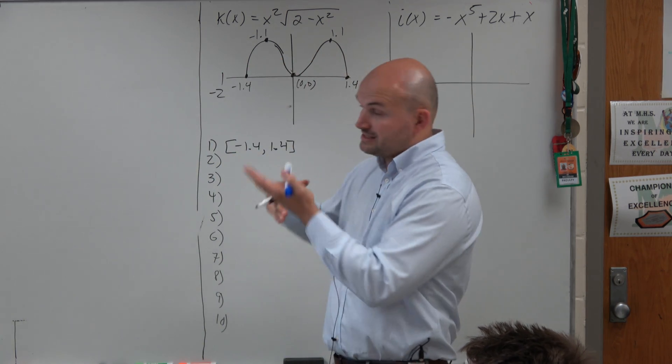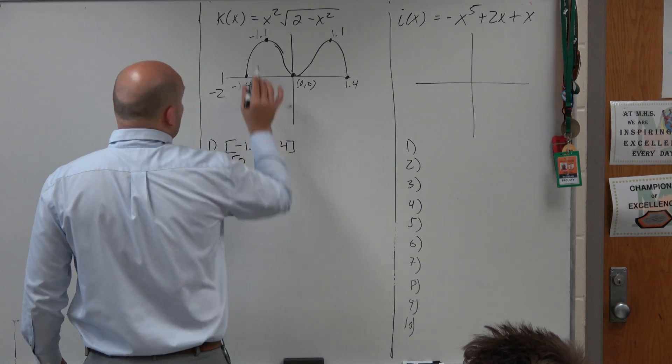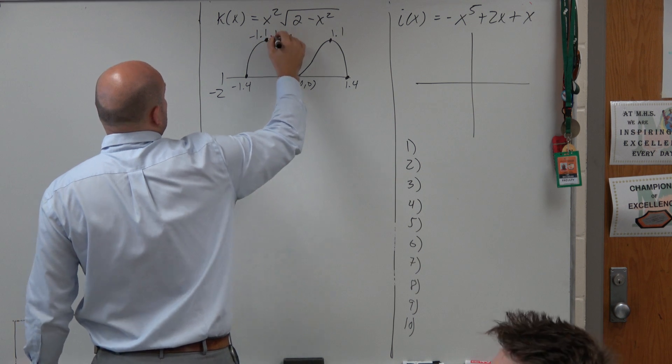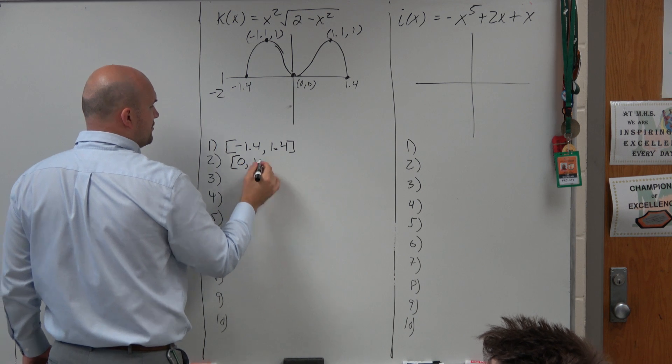Also, you can see the range. Basically, how low does the graph go, how high does it go? But it's restricted between 0, and you can see this point is negative 1, basically 1. So it's from 0 to 1.